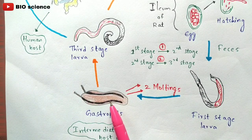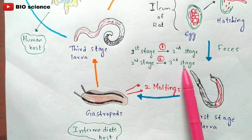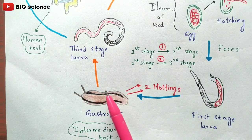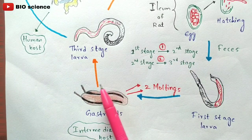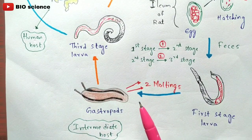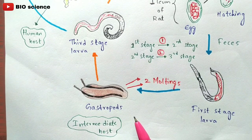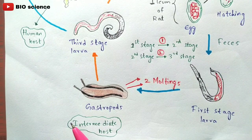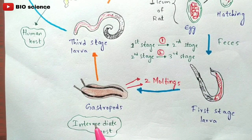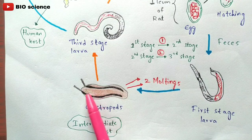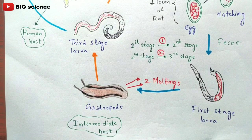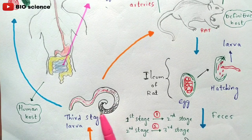So totally two moltings are completed in the gut of the gastropods — snails being the best example. Finally the third stage larva develops in the gastropod. The gastropod then releases the third stage larva, either through its fecal material. These gastropods are considered the intermediate host — the second host in the life cycle. The snails release the third stage larva, which can then be consumed by rats again.